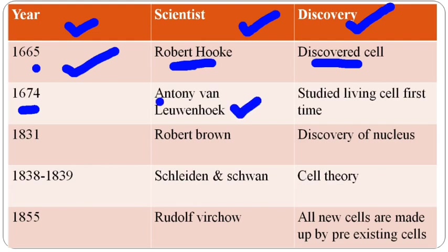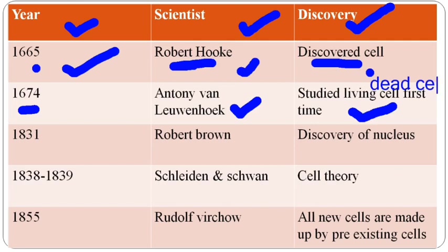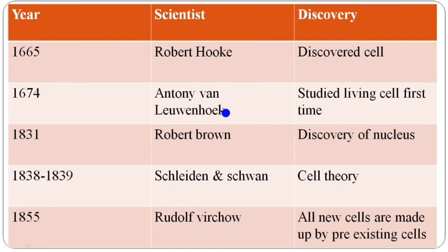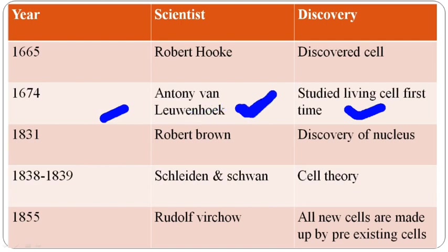Anthony Van Leeuwenhoek studied the living cell for the first time. Robert Hooke had studied the dead cell, but Anthony Van Leeuwenhoek discovered the living cell in 1674. He was the scientist who studied living cells for the first time.